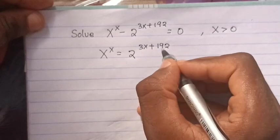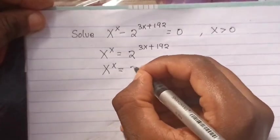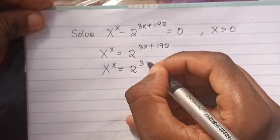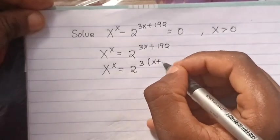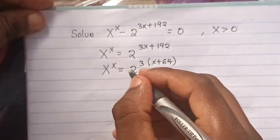We bring 3 out of bracket. It will be x to the x equals to 2 to the 3 times x plus 64.